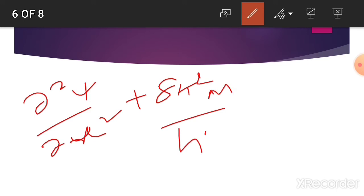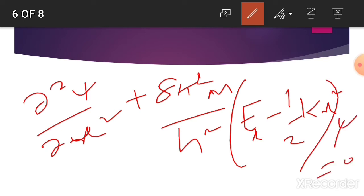If we apply the Schrödinger equation, we get del 2 chi upon del x square plus 8 pi square m upon h square times (E minus V), where V is half kx square, times chi equals 0. This is the simple harmonic oscillator equation, and when we solve this equation, we obtain quantized energy.